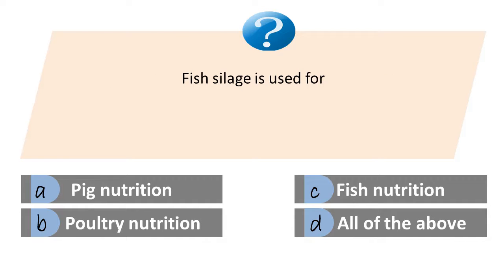Fish silage is used for: A) pig nutrition, B) poultry nutrition, C) fish nutrition, D) all of the above. The answer is D, all of the above. Fish silage is a liquid product made from whole or parts of fish that are liquefied by the action of natural enzymes in the fish in the presence of an added acid. These enzymes break down fish proteins into smaller soluble units. By using the technology of fish silage, fish waste can be preserved and transformed into valuable feed input for livestock or fertilizer for crop production.